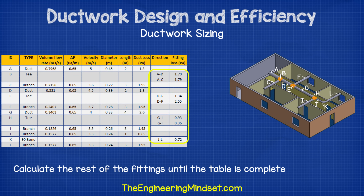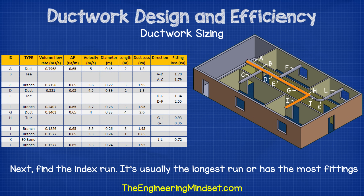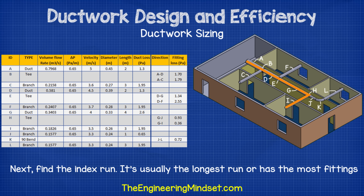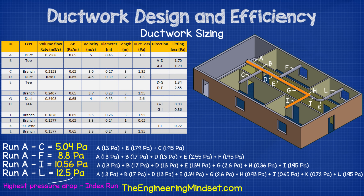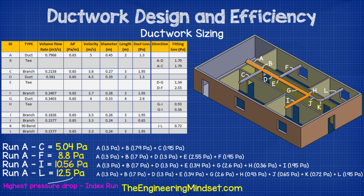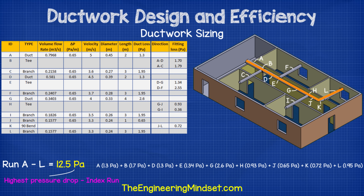Now repeat that calculation for the other T's and fittings until the table is complete. Next, we need to find the index run, which is the run with the largest pressure drop. It's usually the longest run, but it could also be the run with the most fittings. We find it easily by adding up all the pressure losses from start to the exit of each branch. For example, to get from A to C, we lose 5.04 pascals. For A to F, we lose 8.8 pascals. For A to I, we lose 10.56 pascals. And for A to L, we lose 12.5 pascals. Therefore, the fan we use must overcome the run with the highest loss — that being A to L, with 12.5 pascals — this being the index run.